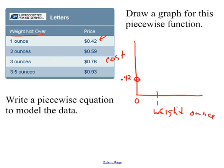So I'm going to open-circle that end at zero. At one ounce, since it's 'not over,' one ounce will be 42 cents — closed circle there. As soon as you go the tiniest bit over an ounce, 1.0001 ounces, you jump up to 59 cents. That gives me an open circle just above one, and anything up to and including two ounces is 59 cents.